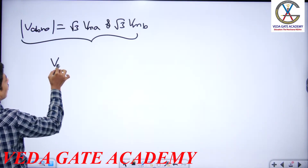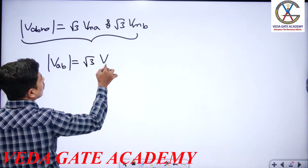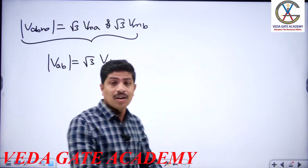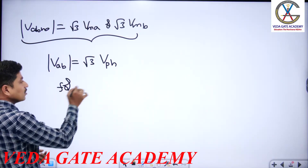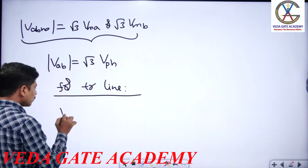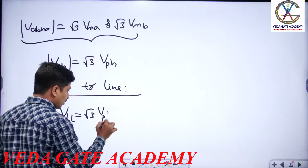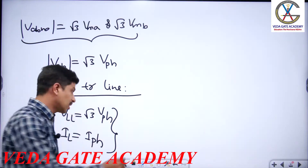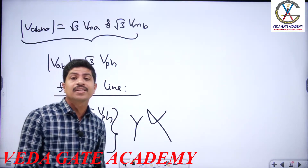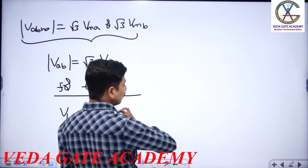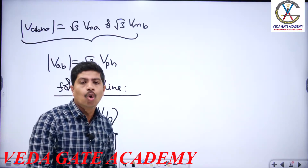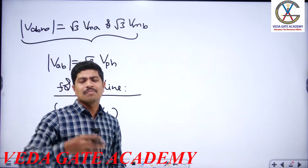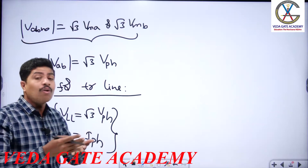For a transmission line, V_line-to-line = √3 · V_phase, and I_line = I_phase. These relationships are exactly the same as those for a star connection, but this does not mean the transmission line is connected in star. Star and delta configurations are valid only for electrical machine windings and loads. For transmission lines, the relationships happen to be the same as star, but the configuration concept itself does not apply.